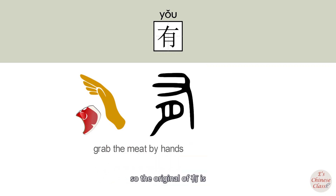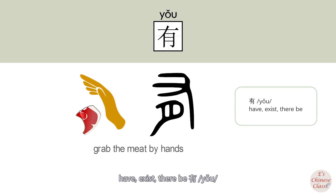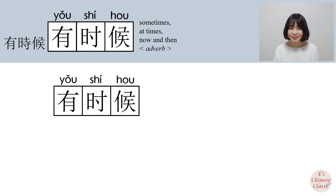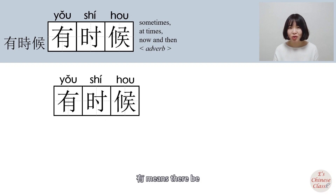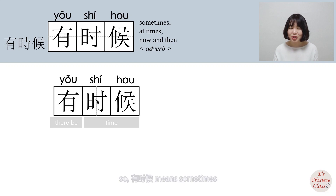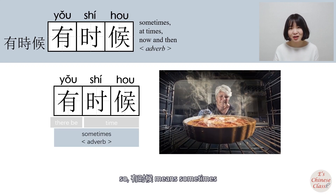So the origin meaning of 有 is 'have,' 'exist,' 'there be.' 有 means 'there be.' 时候 means time, so 有时候 means 'sometimes.'